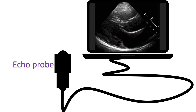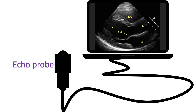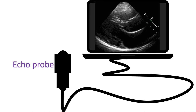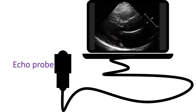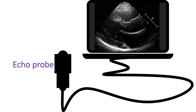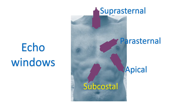Echo beams cannot be sent from all parts of the chest, as the lungs cover the heart in most regions. Air in the lungs does not allow ultrasound beams to pass into the heart and appears as dense white echoes. Regions on the chest and upper part of the abdomen from which echo beams can be sent to the heart are known as echo windows. In these regions, the lungs usually do not cover the heart much, or the heart is very close to the probe.